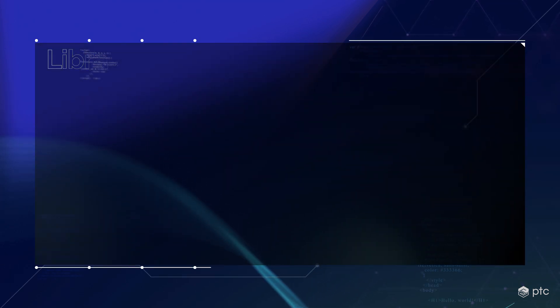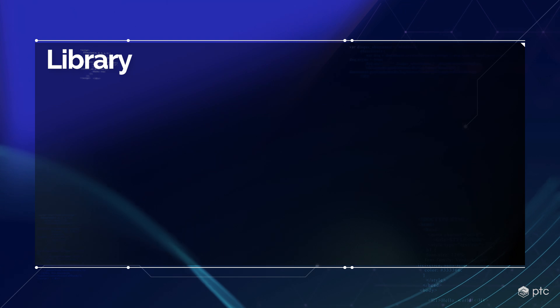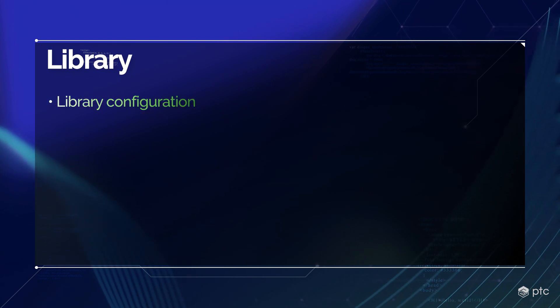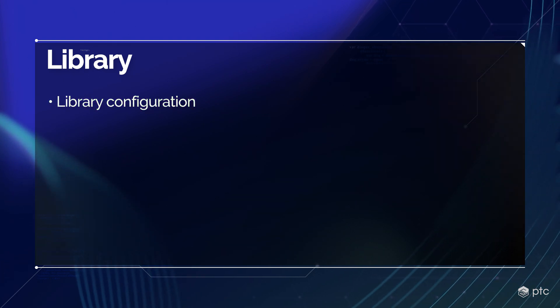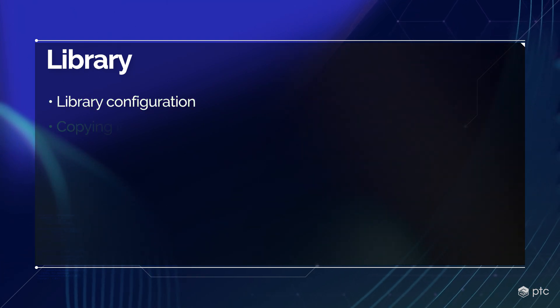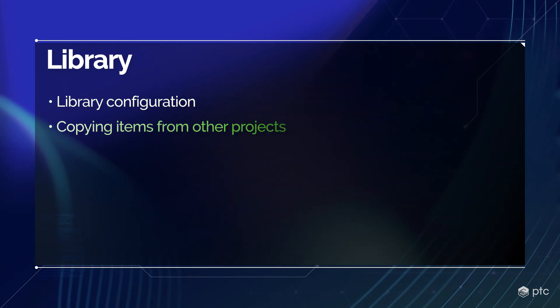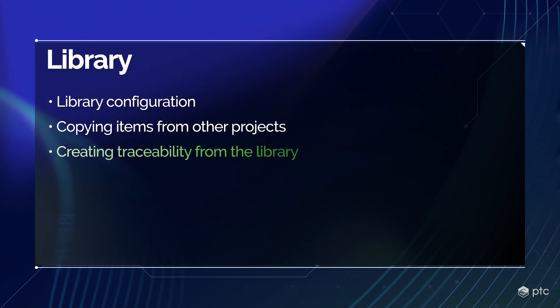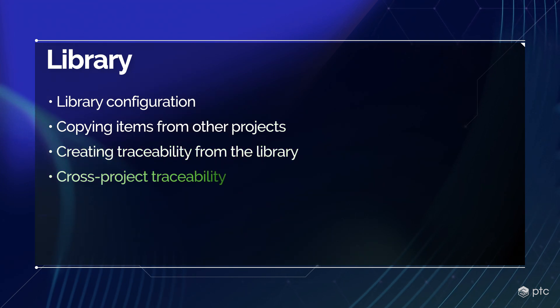In this video we're going to talk about the library function of Codebeamer. We're going to see how to configure it and the three main use cases: copying items from other projects, creating traceability, and creating cross-project traceability. Let's go to Codebeamer and see how to use it.